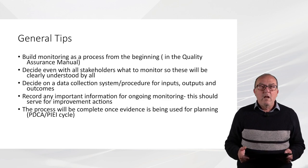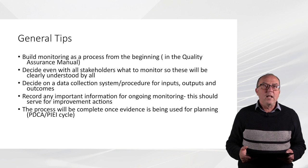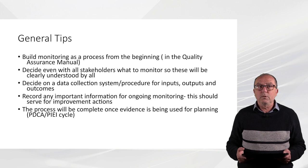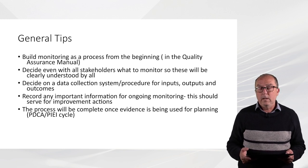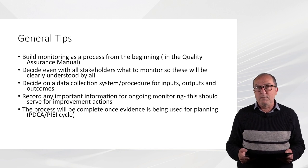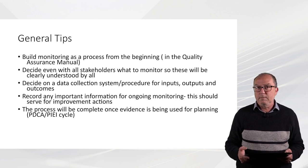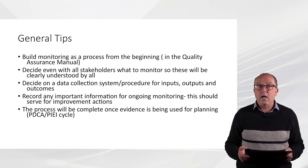General tips. First, build monitoring as a process in your quality assurance manual — so it must be written there. Decide, even with all the stakeholders, what to monitor, so these will be clearly understood by all. Decide also on a data collection system with procedures for inputs, outputs and outcomes. Record any important information for ongoing monitoring, as this should serve for improvement action. Finally, the process will be complete once evidence is being used for planning the PDCA or PIEI cycle.